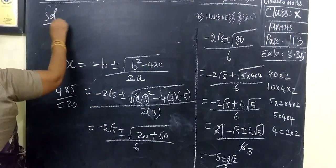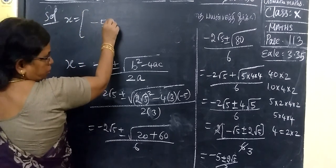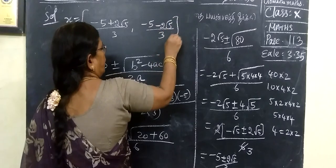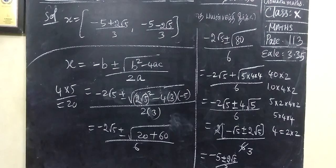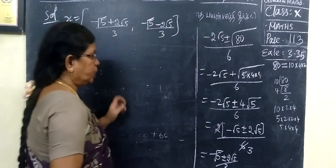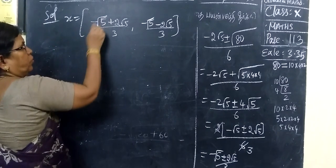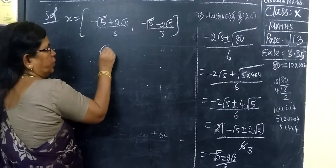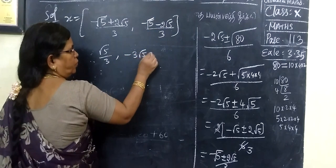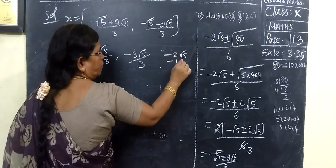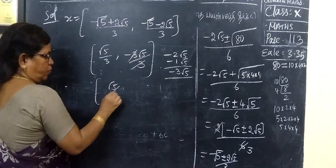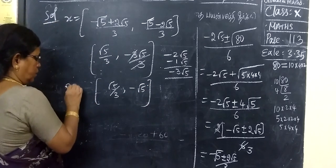Therefore, the solution is: x equal to minus 5 plus 2 root 5 by 3, and x equal to minus 5 minus 2 root 5 by 3. Now we check the answer. This is root 5 in this step. Minus 1 root 5 plus 2 root 5 gives root 5 by 3. Then minus 2 minus 1 is minus 3 root 5 by 3, that is minus root 5. So, this is the solution.